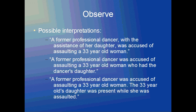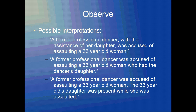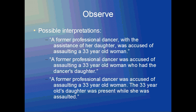This is my first interpretation: a former professional dancer, with the assistance of her daughter, was accused of assaulting a 33-year-old woman. Now 'her daughter' from the original sentence is lexically ambiguous because it's not clear whether the daughter belongs to the dancer or the 33-year-old woman. 'With,' as in 'with her daughter,' is semantically ambiguous because it's not clear whether the daughter is merely present or accompanies the dancer, or that the dancer actually uses her daughter to assault the 33-year-old woman.